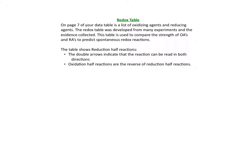Page seven of your data table is a list of oxidizing agents and reducing agents. The redox table was developed from many experiments, and the evidence is collected and tabulated. This table is used to compare the strength of oxidizing and reducing agents to predict spontaneous redox reactions. The table shows reduction half-reactions, and the double arrows indicate the reaction can be read in both directions. Oxidation half-reactions are the reverse of a reduction half-reaction.